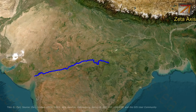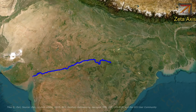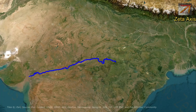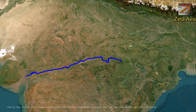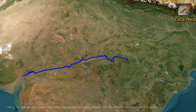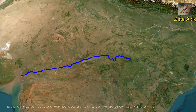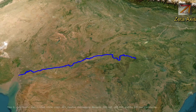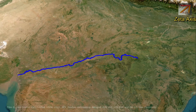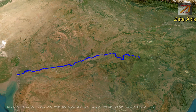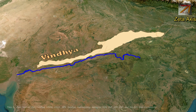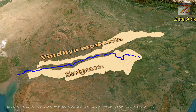Narmada River is one of the important rivers of India and it divides India into northern and southern parts. The Narmada River flows through central India and is also called Reva. It flows in a rift valley formed by Vindhya mountains in the north and Satpura mountains in the south.